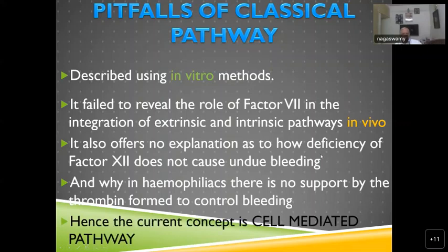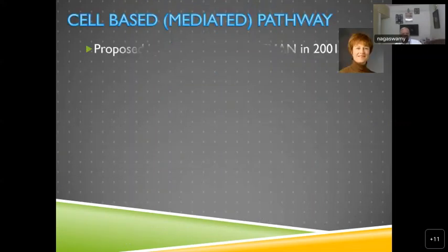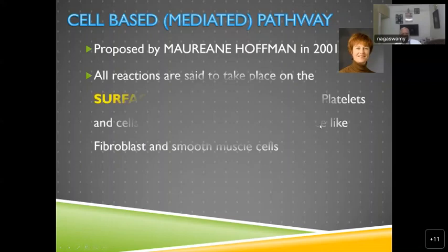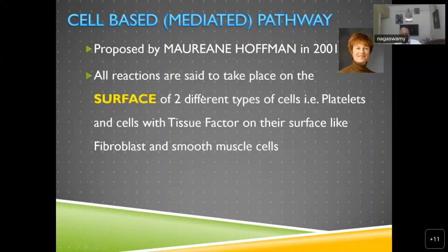Hence the current concept — the cell-based coagulation pathway — was proposed by Maureen Hoffman in 2001. All reactions are said to take place on the surface of two different types of cells: platelets and cells bearing tissue factor. The tissue factor-bearing cells are fibroblasts and smooth muscle cells.